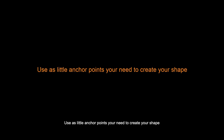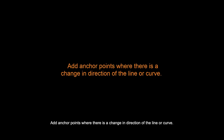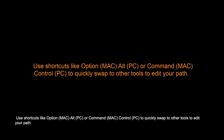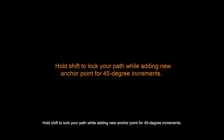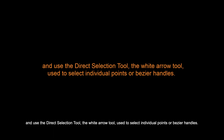Here are some tips for using the pen tool: use as few anchor points as you need to create your shape. Add anchor points where there is a change in the direction of the line or curve. Use shortcuts like Option/Alt or Command/Control to quickly swap to other tools to edit your path. Hold the Shift key to lock your path while adding new anchor points for 45-degree increments. And use the direct selection tool — the white tool — to select individual points or Bezier handles.